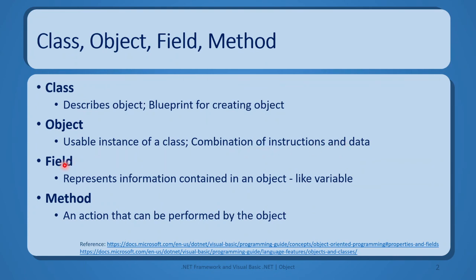In our program, we are going to have a field and method in our object. A field is like a variable which can hold some information, whereas a method is an action that can be performed by our object.